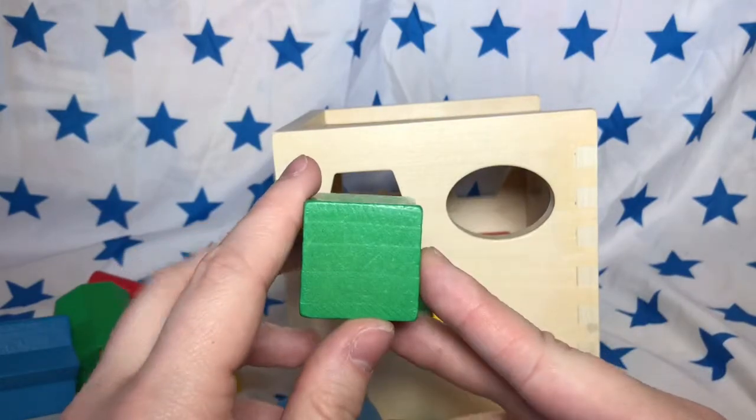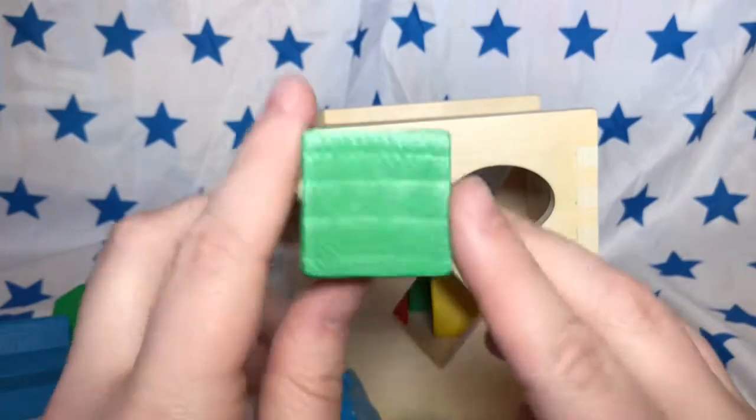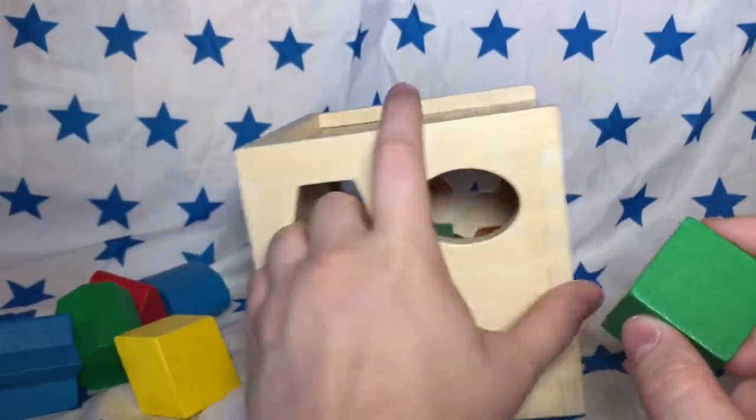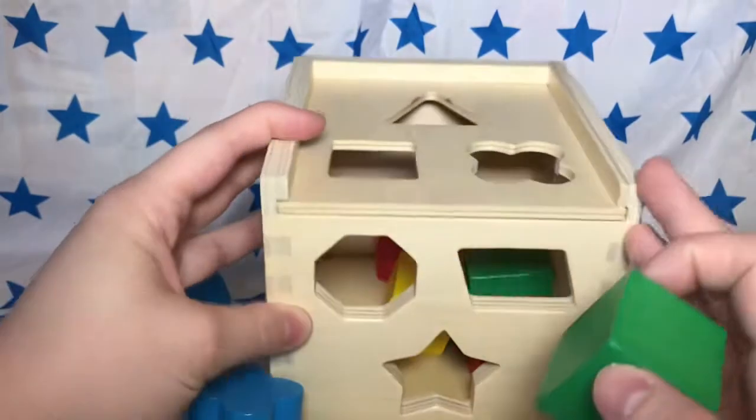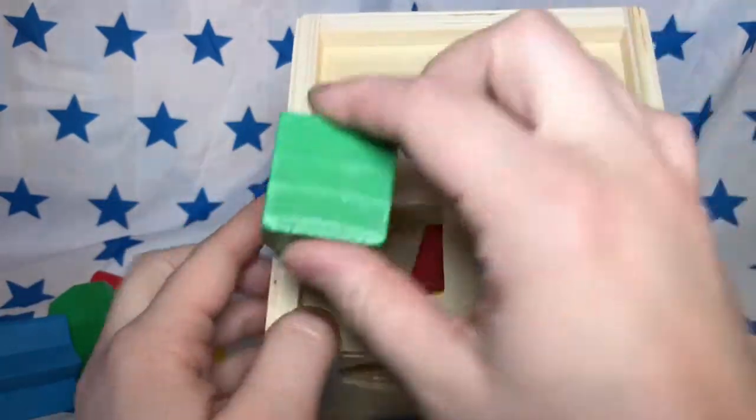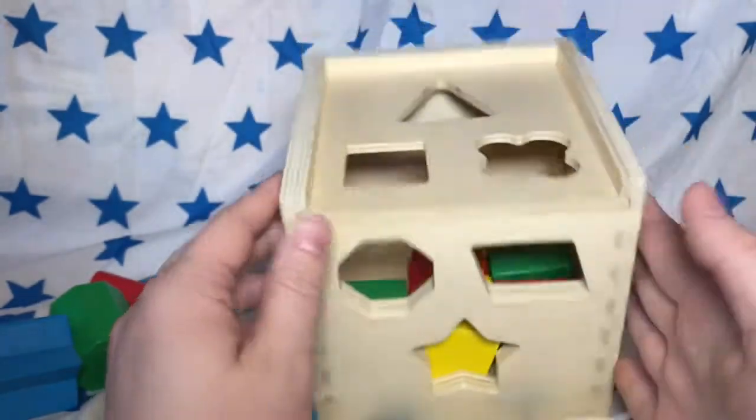This looks a lot like the rectangle, but all the sides are even. This is a green square. This has four even sides, so I think they match. We did it! Good job!